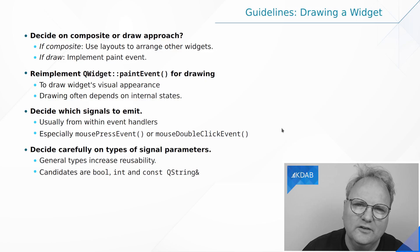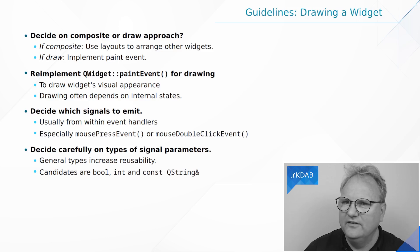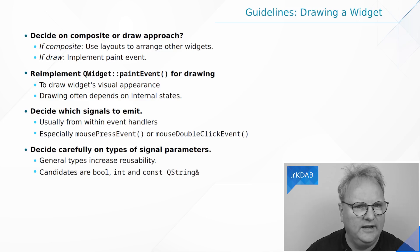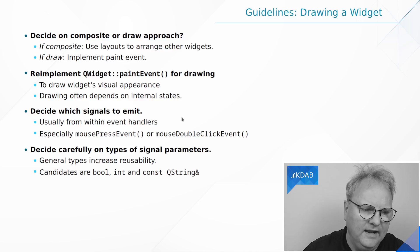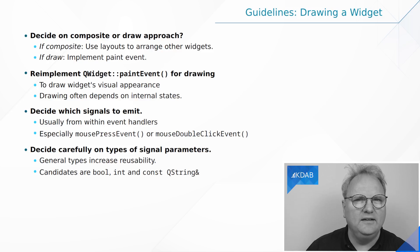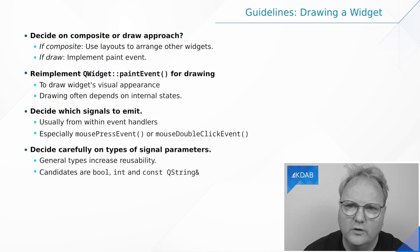You'd also need to decide on what signals to emit from your widget. It might be as simple as emitting a click signal whenever the user clicks on it. If you were implementing a checkbox, you would emit the click signal and checked/unchecked signal. And finally, you'd have to choose the parameters for your signals — if you're putting out some very complex data structure, the likelihood of somebody else using it is way less. But if you're emitting something with just a bool on/off state, then somebody else might connect that signal to a setEnabled slot for another widget.